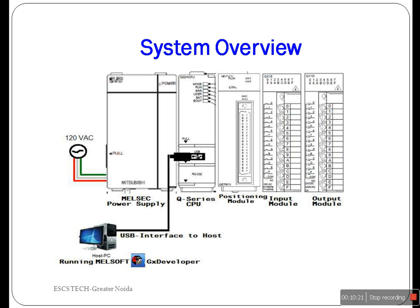Now let us get familiar with the hardware components. The Q02H CPU is powered by the Melsec Q61PA1 power supply module. The CPU is then expanded with the QX10 input and QY10 output modules. The figure shows the system overview: the Melsec power supply is the power source for all other modules, and the Q3 CPU runs the main program that may utilize positioning modules and other expansion modules.